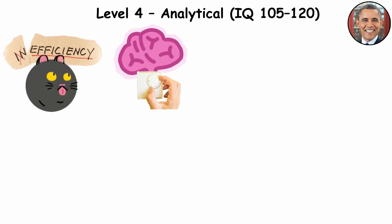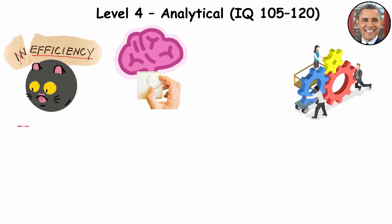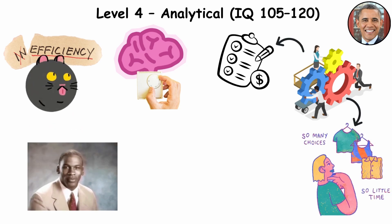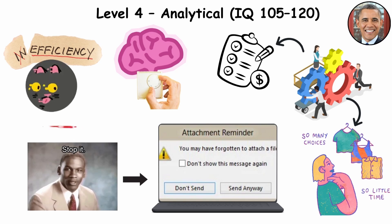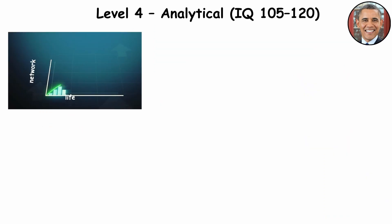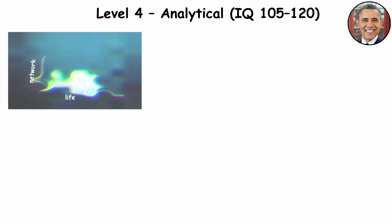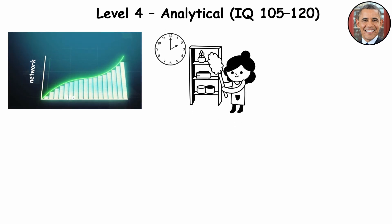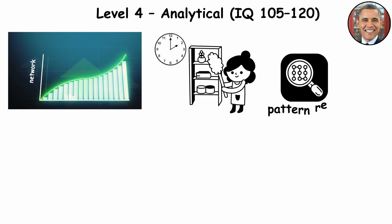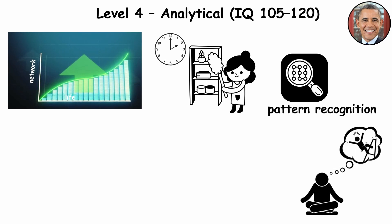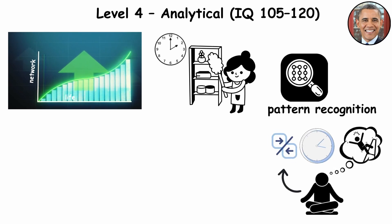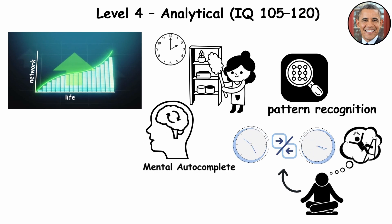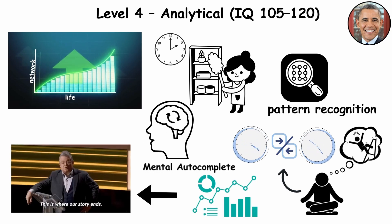Their minds run on executive functions, the mental project management system that plans, prioritizes, and stops you from sending a work email that just says, see attached, with no attachment. When this network fires well, life looks organized. When it glitches, you find them reorganizing the pantry at 2am for stress relief. They're powered by pattern recognition, the brain's ability to predict what comes next by comparing the present with every memory of the past. Think of it as mental autocomplete. See enough data, and your mind starts guessing the ending.